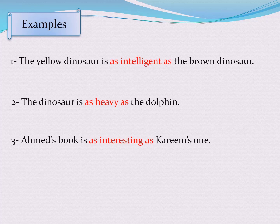Ahmed's book is as interesting as Karim's one. كتاب أحمد وكتاب كريم متساويين — الاثنين كتابين مسليين بنفس درجة التسلية. Notice that whether the adjective is a tall adjective like 'intelligent' or a short adjective like 'heavy', we do not change it — we simply place as before it and as after it.